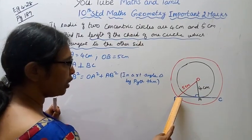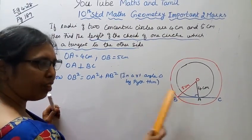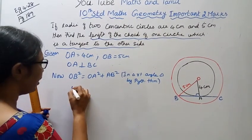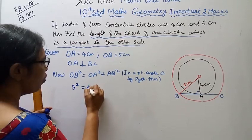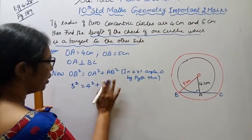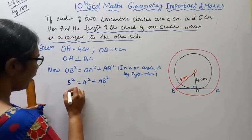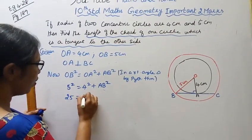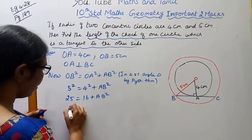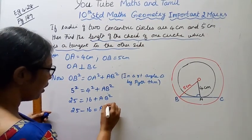By Pythagoras theorem: OB square equals OA square plus AB square. So 5 square equals 4 square plus AB square. That gives us 25 equals 16 plus AB square. Therefore, 25 minus 16 equals AB square.